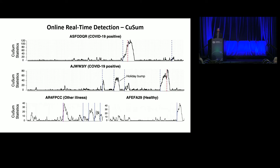We've built a real-time detection system. We take people's resting heart rate for 28 days on an hour-by-hour basis, look for a statistically significant jump-up, and set it to a sensitivity where alarms go off every six weeks. In one case, the alarm goes off about seven days prior to symptoms; in another case, about nine days prior. A lot of people get bumps over the holidays — that could be stress or alcohol — and even healthy people will get these bumps, which are real signals due to elevated heart rates for prolonged periods.